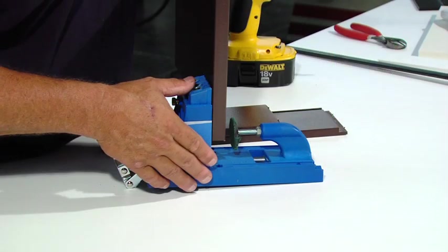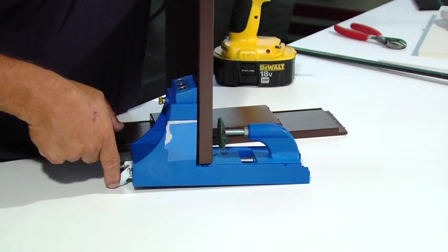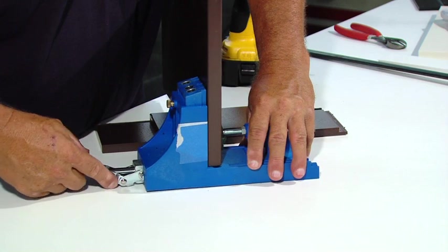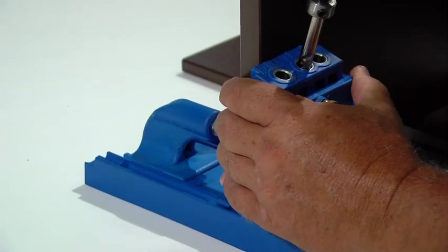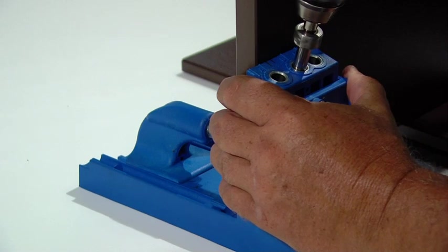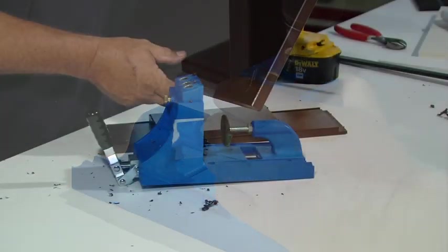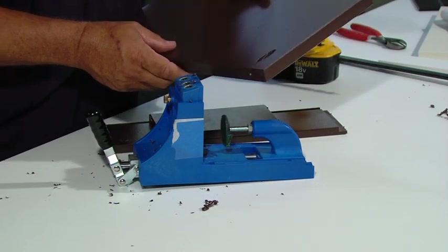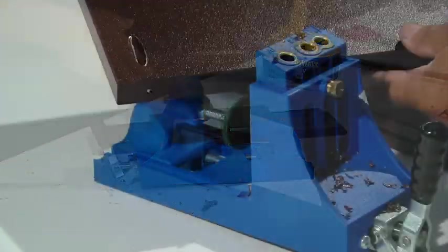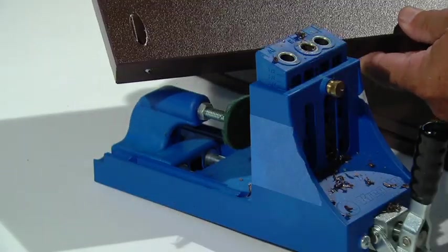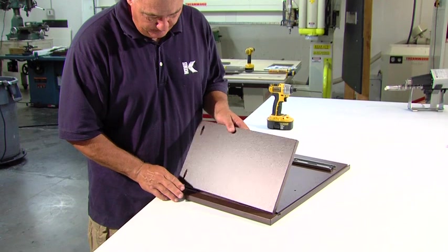Using a pocket hole jig is the best and fastest way to create strong plastic joints with concealed fasteners. Pocket joints are similar to dowel joints except that a screw is used and only one joint element is to be drilled. The holes are drilled at a shallow angle on the back of the piece. These shallow holes conceal the fastener and create a very strong joint.